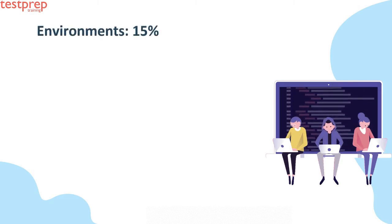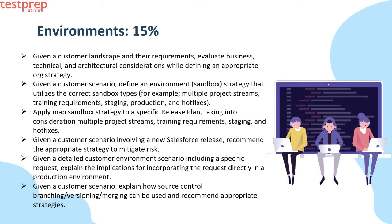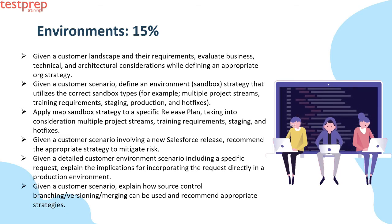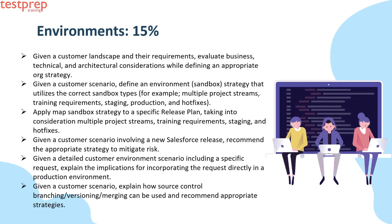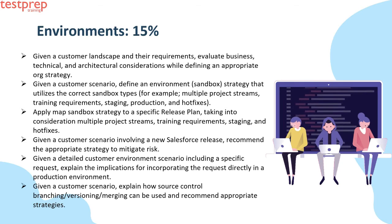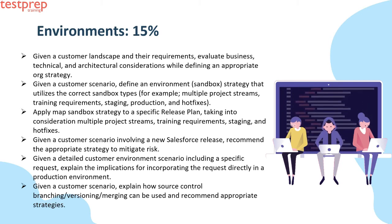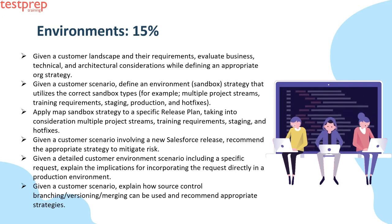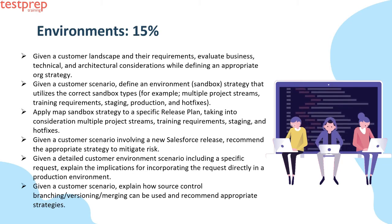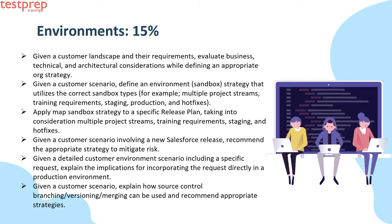Number one: Environments, 15%. It contains: First, given a customer landscape and their requirements, evaluate business, technical, and architectural considerations while defining an appropriate org strategy. Second, given a customer scenario, define an environment and sandbox strategy that utilizes the correct sandbox types — for example, multiple project streams, training requirements, staging, production, and hotfixes. Third, apply and map sandbox strategy to a specific release plan, taking into consideration multiple project streams, training requirements, staging, and hotfixes. Fourth, given a customer scenario involving a new Salesforce release, recommend the appropriate strategy to mitigate risk. Fifth, given a detailed customer environment scenario including a specific request, explain the implications for incorporating the request directly in a production environment. Sixth, given a customer scenario, explain how source control branching or versioning and merging can be used, and recommend appropriate strategies.